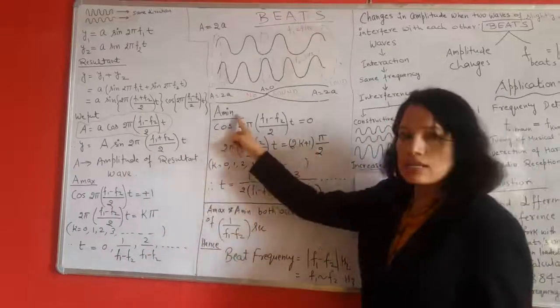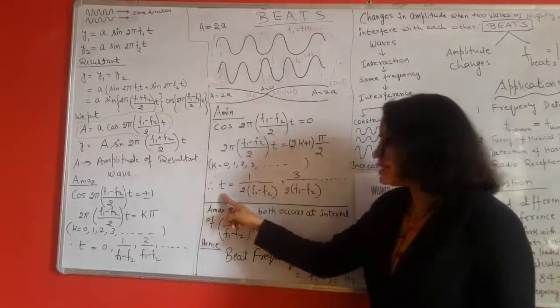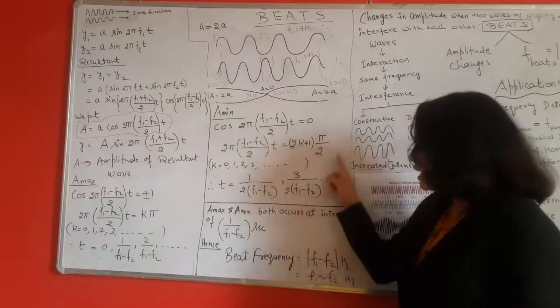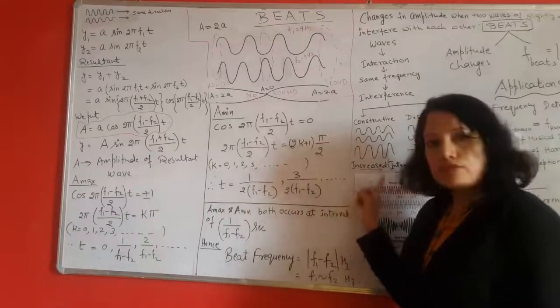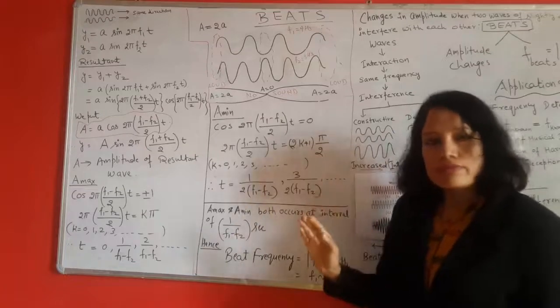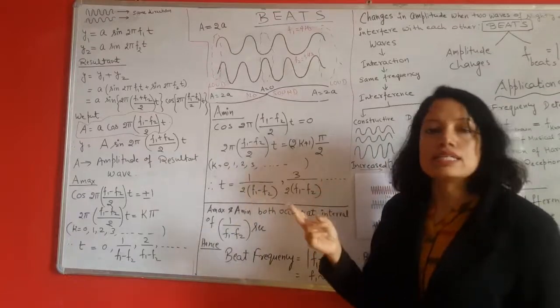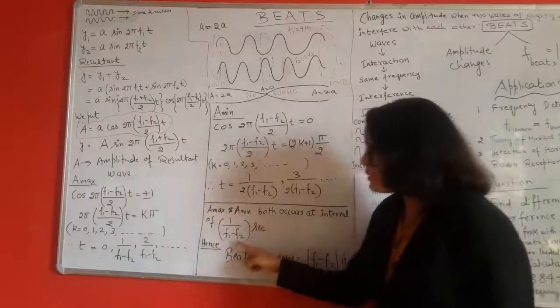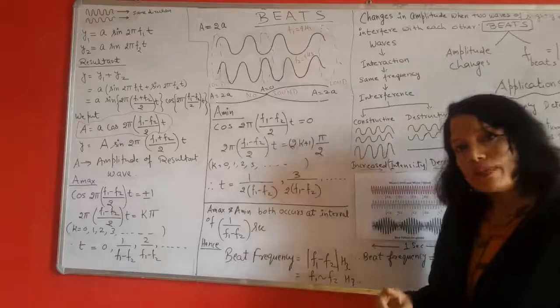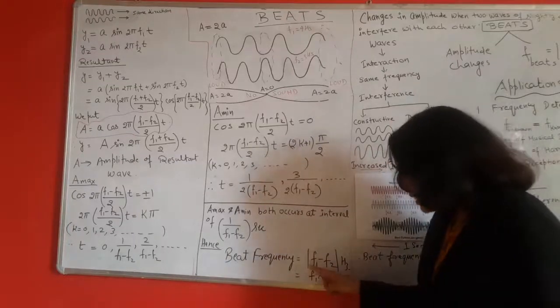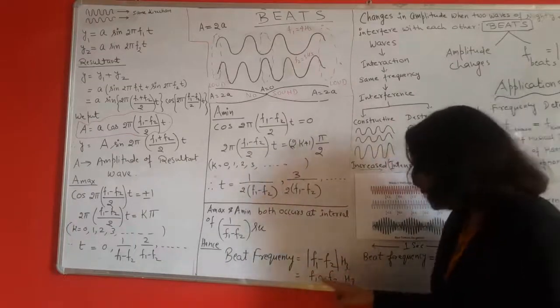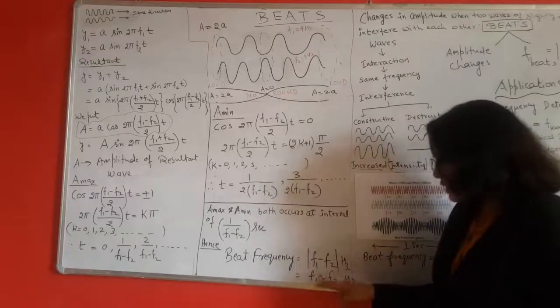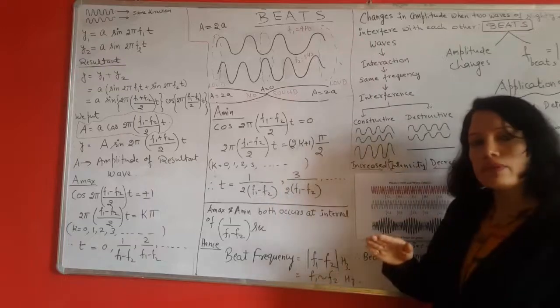Similarly for A min, we will get the values of t as 1/(2(f1 - f2)), 3/(2(f1 - f2)), 5/(2(f1 - f2)) and so on. Here we see that the time difference of occurrence of 2 consecutive maxima or 2 consecutive minima is equal to 1/(f1 - f2), and hence the beat frequency is given by |f1 - f2|. Negation is a symbol which says that the difference would happen from a bigger number to a smaller number.